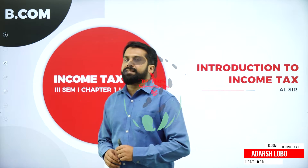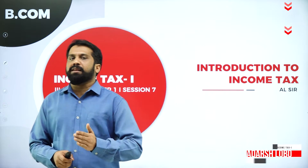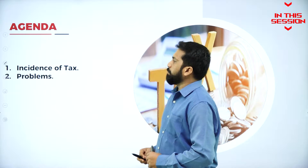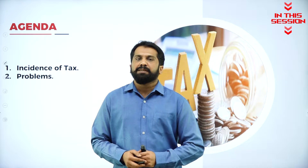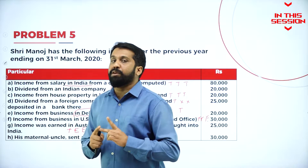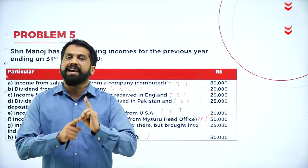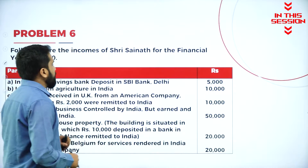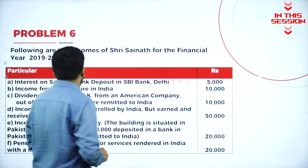What is incidence of tax? Like the tax payable or tax calculation. The agenda is very simple — incidence of tax as well as problems. Anything which is collected below 50,000 irrespective of person is exempted. Interest on saving bank: taxable.